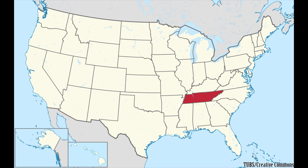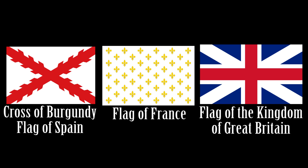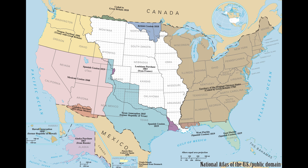The first flags in what is now the American state of Tennessee were those of the European colonial empires that explored there, including the Spanish, French, and British. At the conclusion of the American Revolution in 1783, the land that is now Tennessee became part of the initial territory of the new United States of America. In 1796, Tennessee was admitted as the 16th state in the Union.